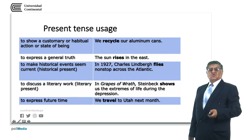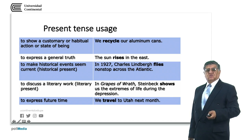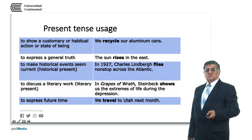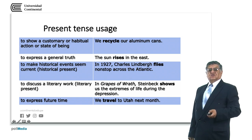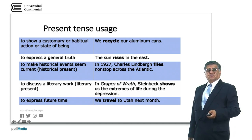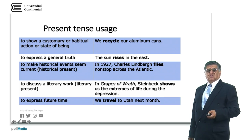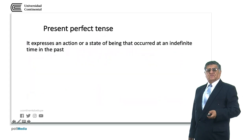The present tense can also express future time. For example: we travel to Utah next month. This is something arranged or fixed in the future, so we can use the present tense to express these ideas.